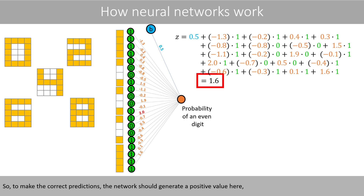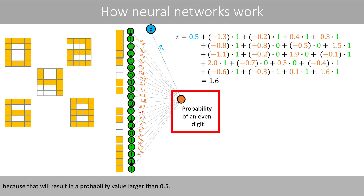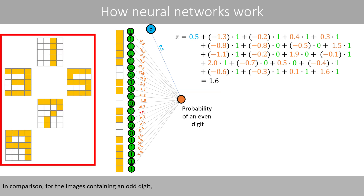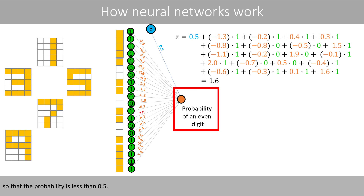So to make the correct predictions, the network should generate a positive value for all even digits, because that will result in a probability value that is larger than 0.5. In comparison, for the images containing an odd digit, the network should result in a negative value, so that the probability is less than 0.5.